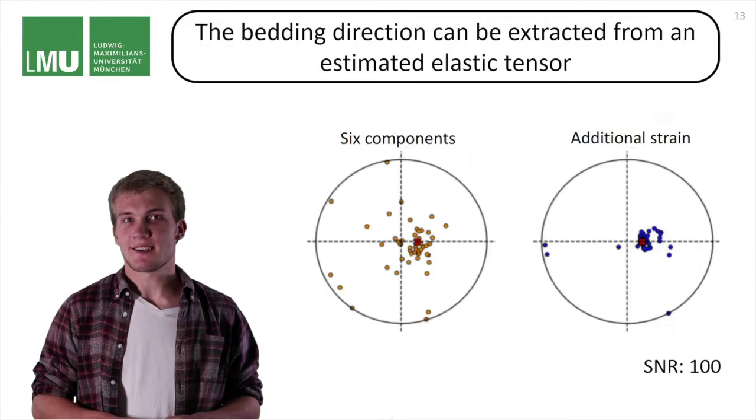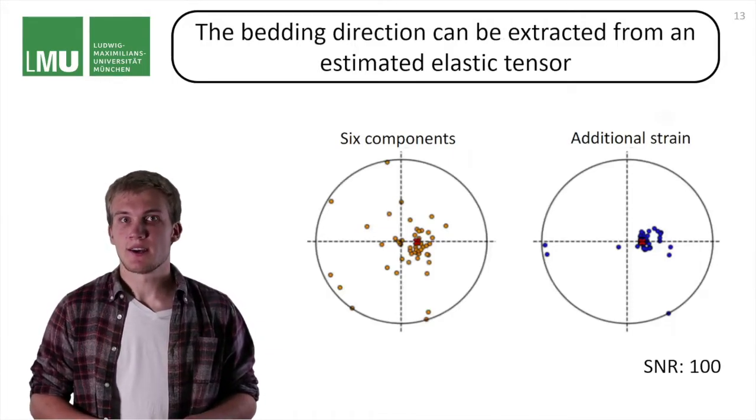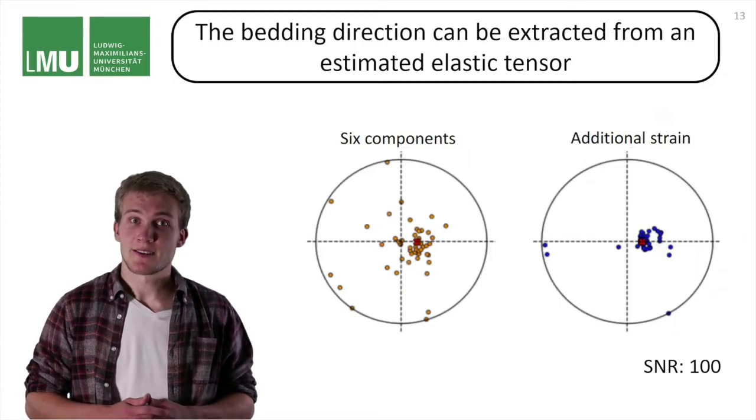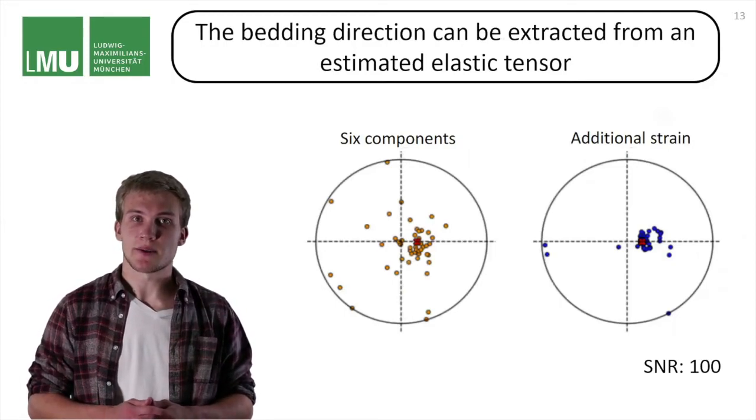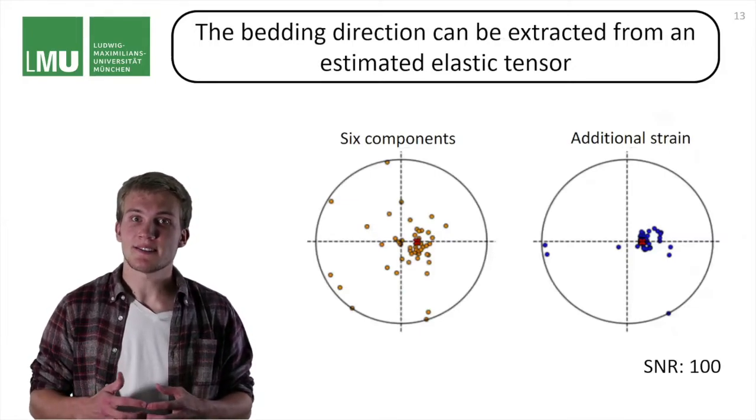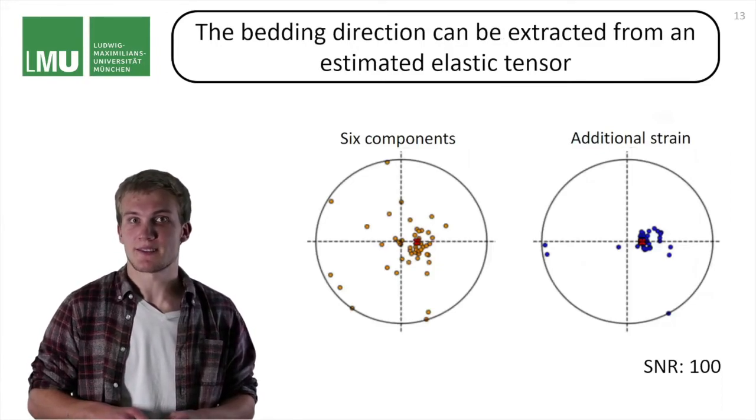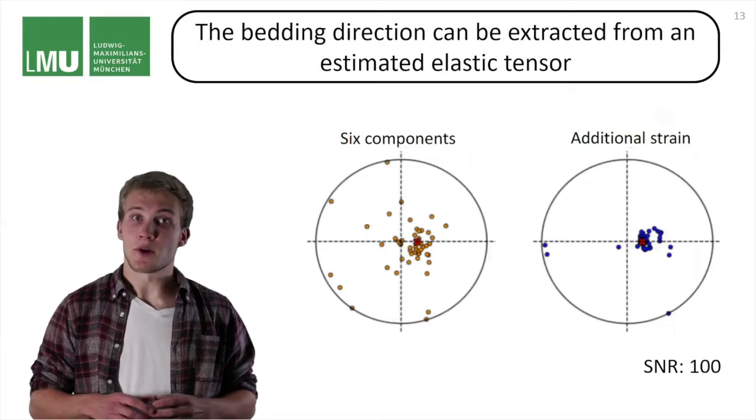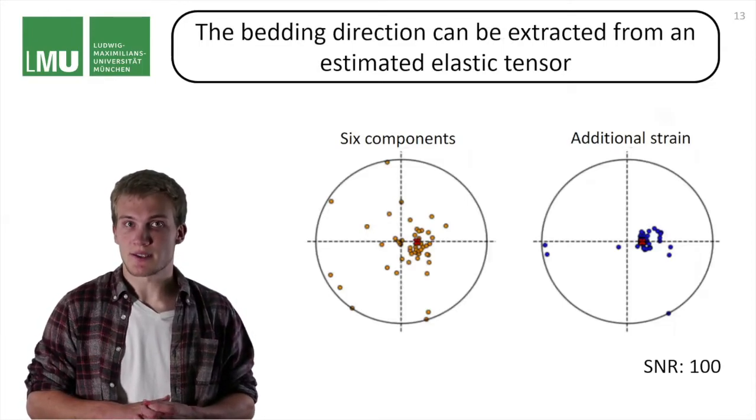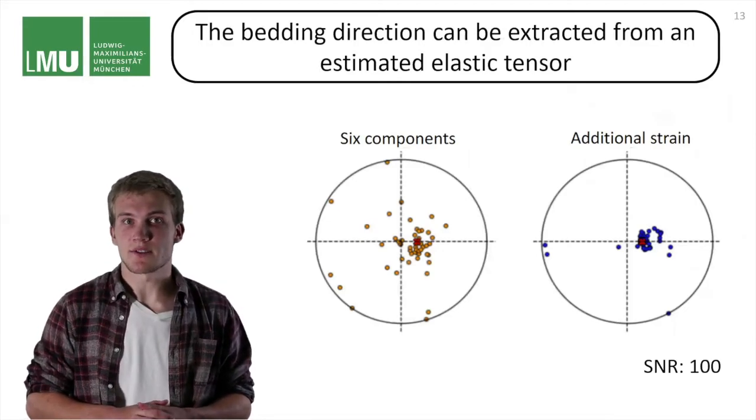Retrieving the symmetry axis is actually more complicated than it might seem at first glance. The estimated elastic tensor will always be, due to the noise, triclinic and has no symmetries whatsoever. Nevertheless, we go ahead and try to find a hexagonal system within that fits this triclinic tensor best. As you can see, most of the measurements scatter nicely around this true direction, even though it is, of course, more pronounced for the seven-component case.